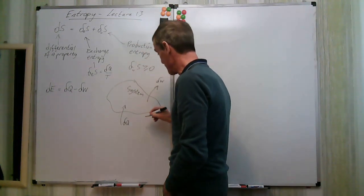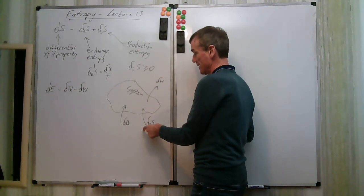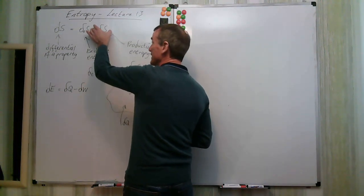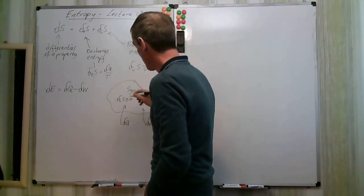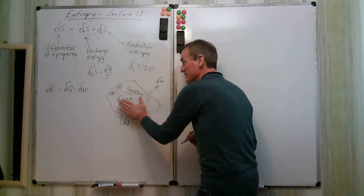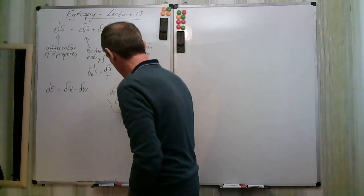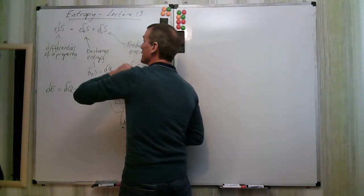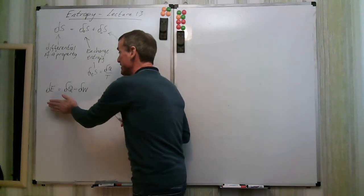Now with entropy we also have a transfer term delta_eS at the boundary of the system, but we also have a production term delta_iS, which is greater than or equal to zero. This is an unusual thing — this production term we don't see with energy but we do see with entropy. It's a non-conservation: something is being created all by itself within the system.